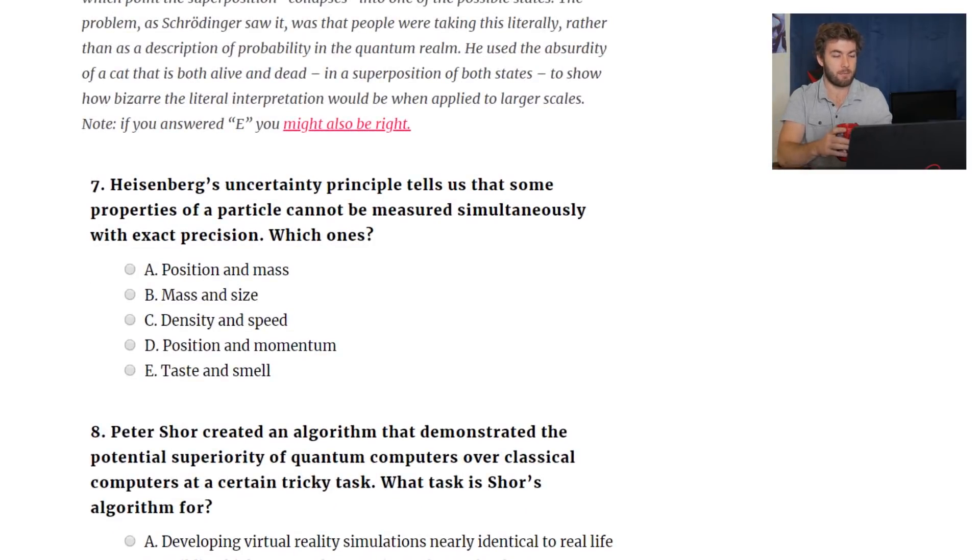Heisenberg's uncertainty principle tells us that some properties of a particle cannot be measured simultaneously with exact precision. Which ones? The cool thing about the uncertainty principle is that there's also the generalized uncertainty principle. Classical observables are replaced with quantum operators. The differential operators are also linear. And these operators don't always commute. AB minus BA isn't always zero. And when it's not zero, that corresponds to you not being able to measure those things at the same time. And you can calculate the lack of precision, I guess you could say, between those operators, between those observables, through the generalized uncertainty principle.